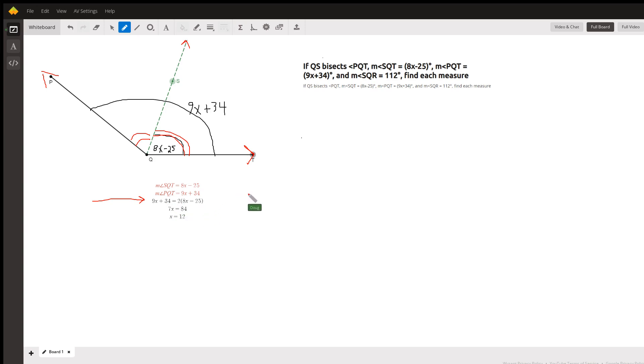If you solve that equation for x, you get x equals 12. So that means that this angle right here, SQT, is 8 times 12 minus 25, which is 96 minus 25, which is 71.